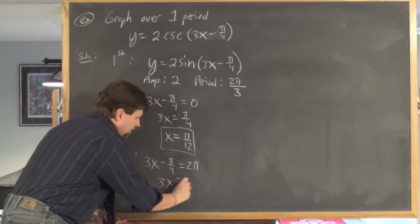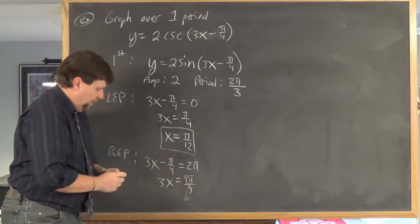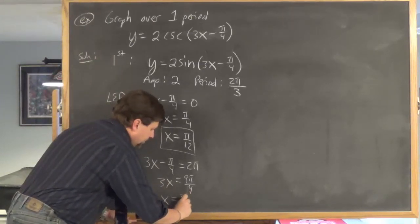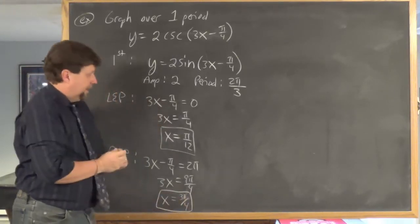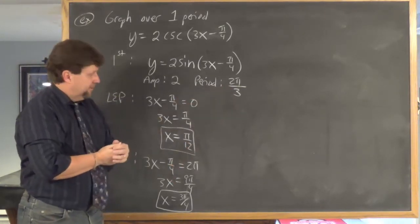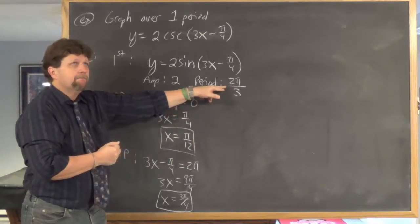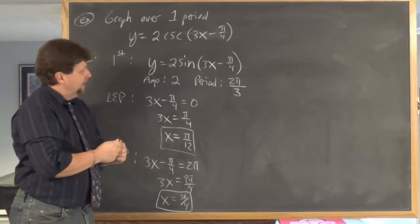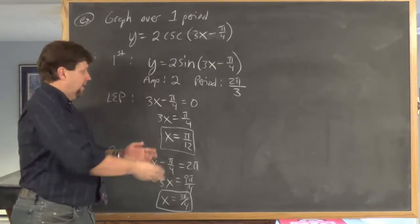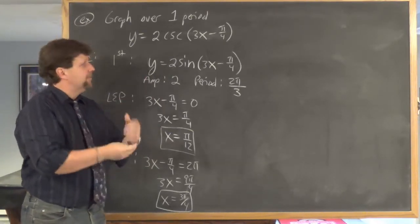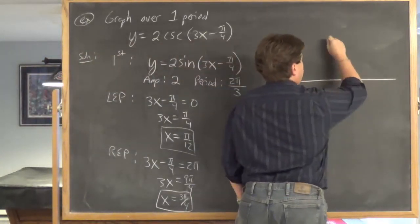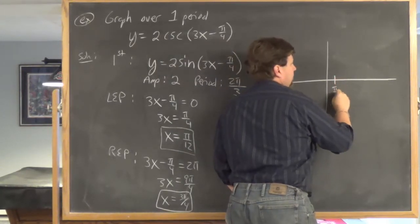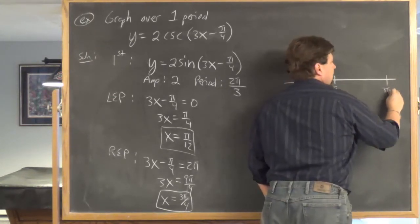You can check: pi over 12 plus 2 pi over 3 equals pi over 12 plus 8 pi over 12 equals 9 pi over 12, which reduces to 3 pi over 4. I now know the left endpoint pi over 12 and right endpoint 3 pi over 4 of one period. So I lay off one period on the x-axis with the left endpoint at pi over 12 and right endpoint at 3 pi over 4. The amplitude is 2, so I'll scale the y-axis accordingly.